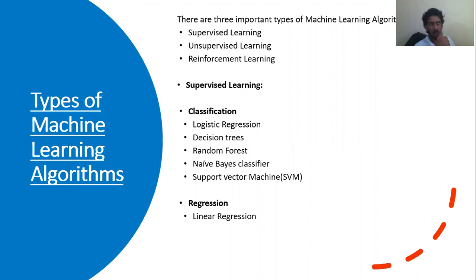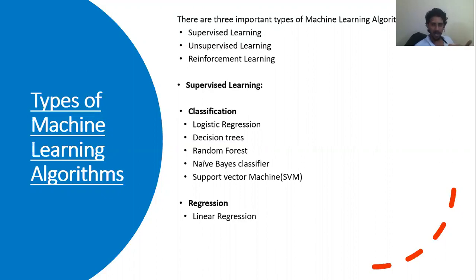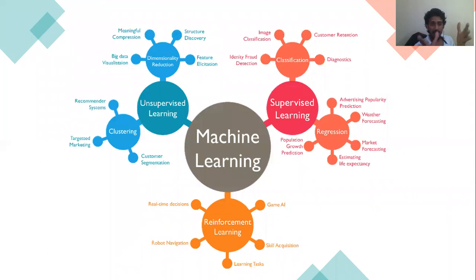Machine learning is divided into three types: supervised, unsupervised, and reinforcement learning. In supervised learning you have regression and classification. In classification you have logistic regression, decision trees, random forest, naive Bayes, support vector machines — a whole range of classification problems.